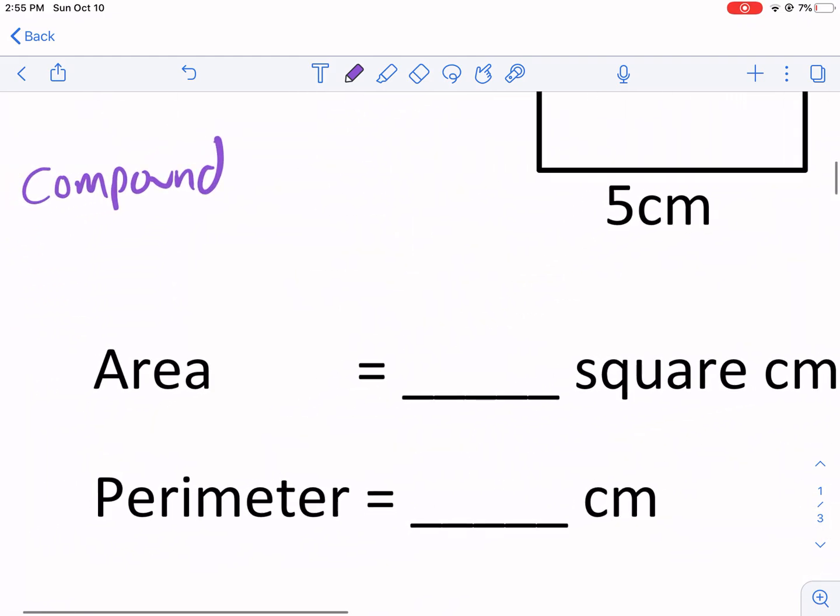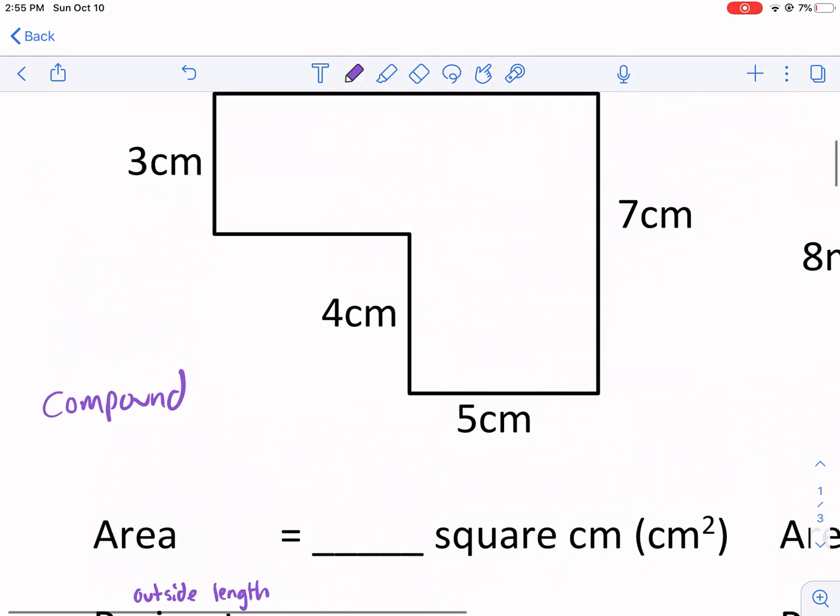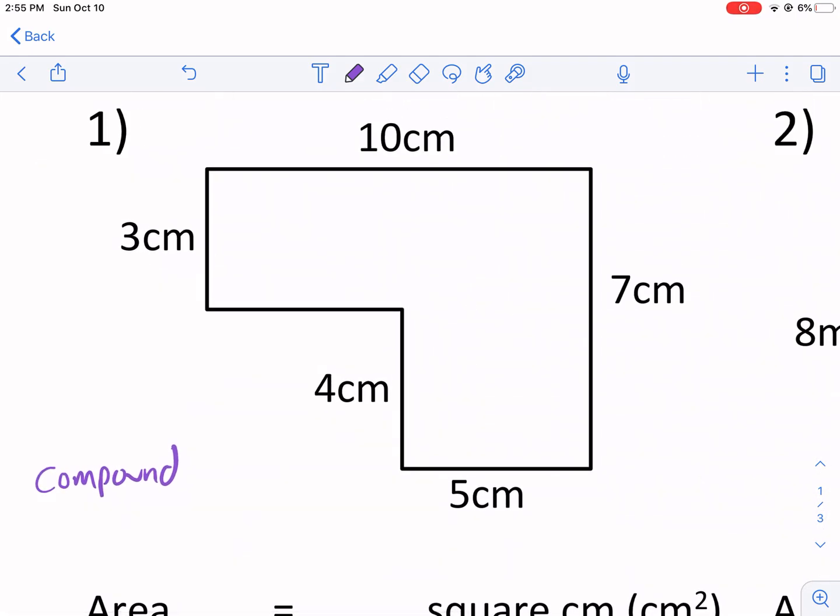Perimeter, think about the outside length. Outside distance of a shape. So we're talking about the outside distance. If you were to run around this shape, or in this case, it looks like an ant would need to do it because it's pretty small, you would have to measure all these distances to figure out how far you traveled.